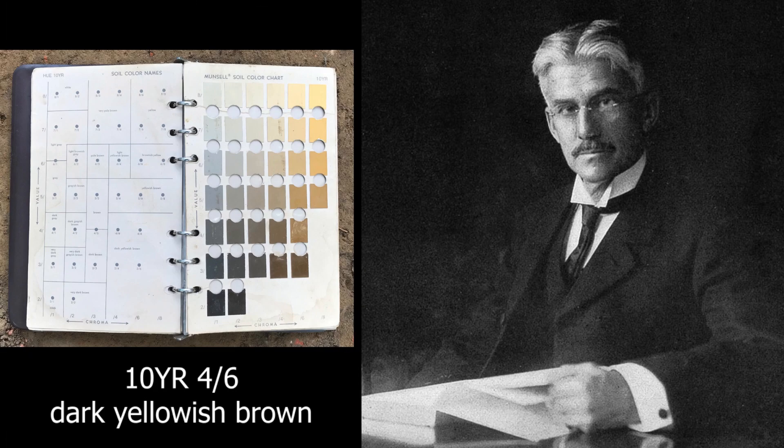Albert Munsell's 1905 system relies on three principles: hue, which measures color; value, which records lightness or darkness; and chroma, which records saturation. Each is measured on an incremental scale.